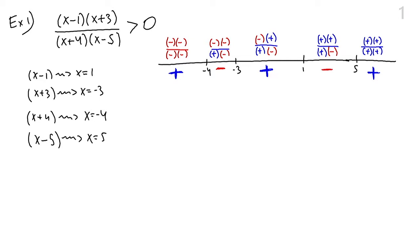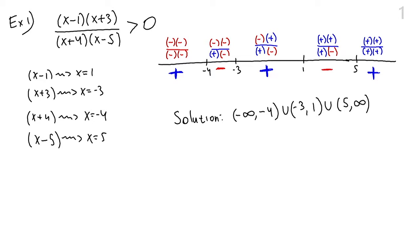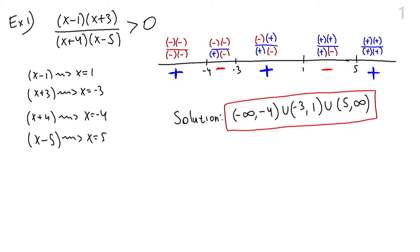The final solution — when is this expression greater than zero — is the following union of intervals. Just like solutions for polynomial inequalities, solutions for rational inequalities are also intervals or unions of intervals: from negative infinity to negative four, union negative three to one, union five to infinity. So just like polynomial inequalities, you factor everything, find the partition points where the expression can change sign, draw them on the number line, and then analyze the sign of each piece.